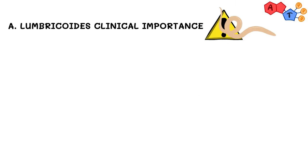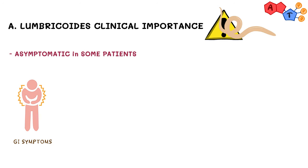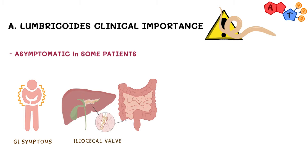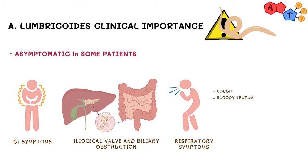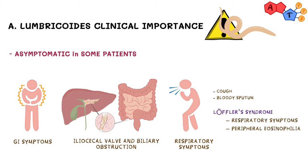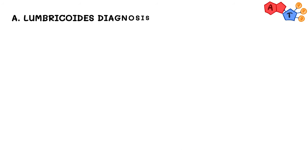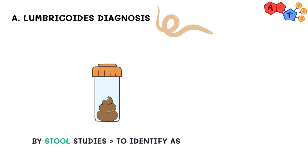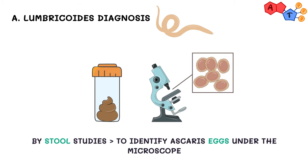Ascaris can cause ascariasis. This infection can be asymptomatic in some patients, while others have GI symptoms including pain, nausea, and vomiting. Due to its large size, it can obstruct many lumens, causing ileocecal valve and biliary obstruction. Moreover, since part of its lifecycle is in the lung, it can cause respiratory problems like cough and bloody sputum, in addition to Löffler syndrome, which is characterized by respiratory symptoms plus peripheral eosinophilia. To diagnose Ascaris lumbricoides, we perform stool studies looking for its eggs, which have a granular pattern and are oval in shape under microscopy.